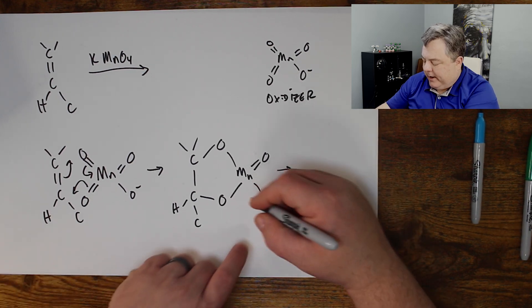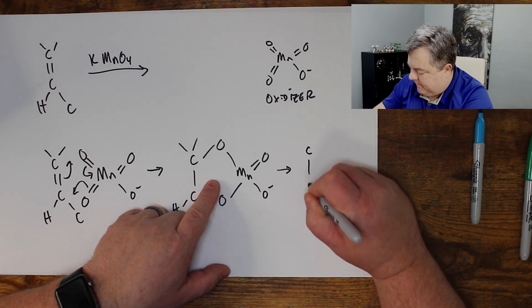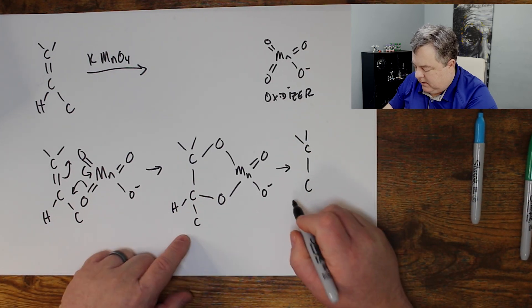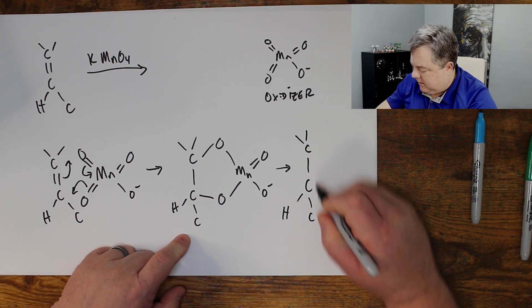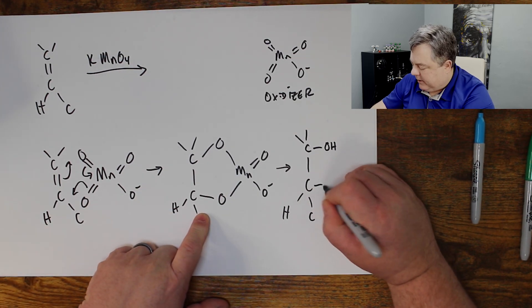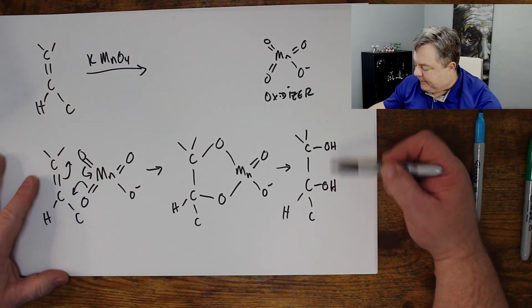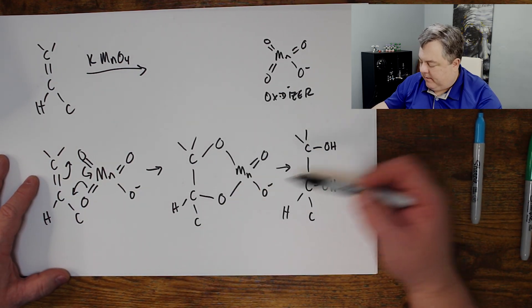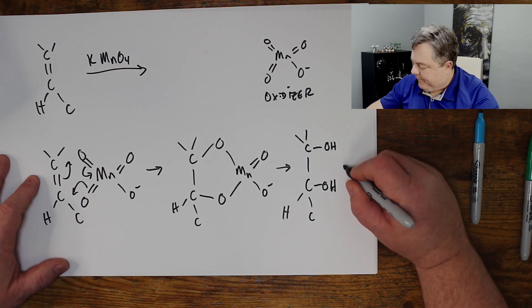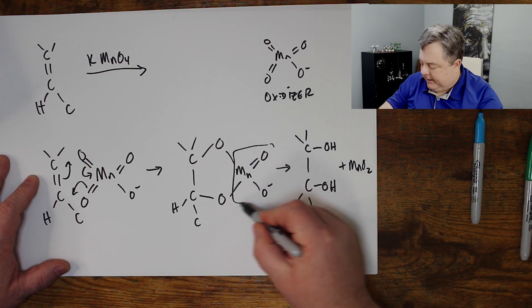That reaction keeps going. And when I'm done, these oxygens stay behind on these carbons. I get two alcohols. Those alcohols go on at the exact same time to the same face of my double-bond. Plus, I have MnO2 left over, manganese dioxide.